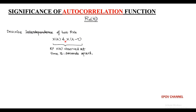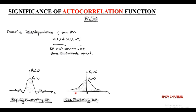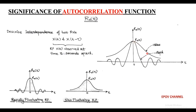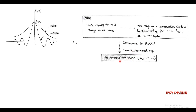When the change or fluctuation between X(t) and X(t minus tau) is very fast, the autocorrelation function, which is maximum at the origin, decreases rapidly with respect to tau, giving an undershoot and overshoot. When the fluctuation is very slow, the autocorrelation function decreases slowly from its maximum value at the origin. This decrease is characterized by a time called the decorrelation time, denoted tau_d or tau_0, where the decorrelation time is greater than the delay time tau.